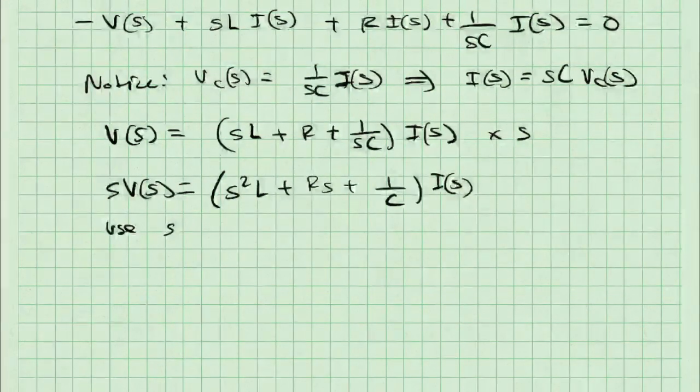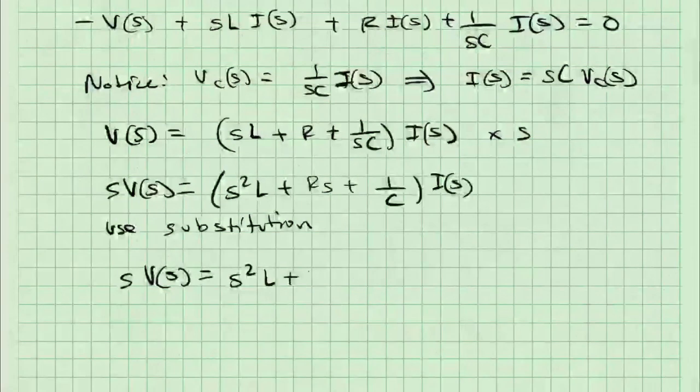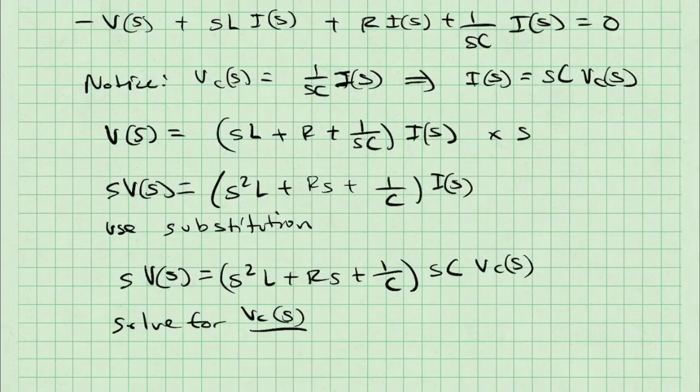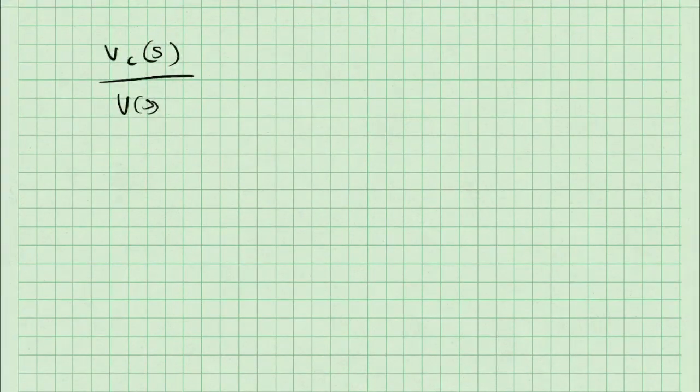Then I'm going to use substitution with the expression I of S is equal to SCVC of S. The very next step is that I'm going to solve for Vc of S over V of S, the transfer function I want. When I do so, what I see is that the S's cancel.